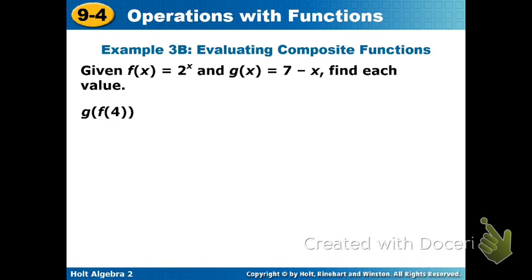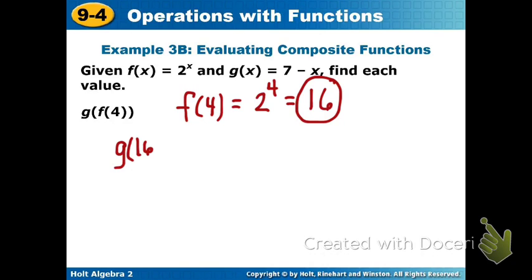Okay, so now we're going to reverse it, and now we're going to take g of f of 4. So we start with the f of 4. So that's going to give us 2 raised to the 4th power, which would be 16. And now this output will become the input for our g of x. So now we're going to have g of 16 equals your 7 minus 16, and 7 minus 16 would be negative 9. So your g of f of 4 equals negative 9.